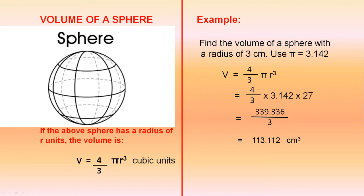For example, find the volume of a sphere with a radius of 3 centimeters. Use pi equals 3.142. V equals 4 over 3 pi r cubed, which is 4 over 3 by 3.142 by 27. Of course, r cubed is 3 cubed which is 27, and when you simplify all that you get 113.112 cubic centimeters.